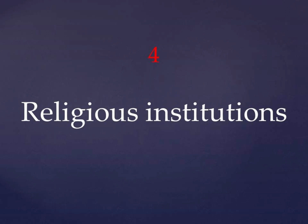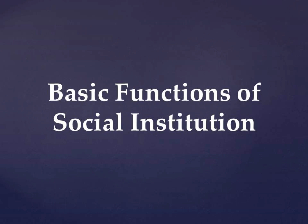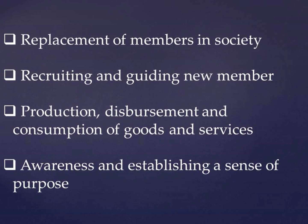Next we are going to discuss about basic functions of social institution. First one is replacement of members in society. The second one is recruiting and guiding new members. Third one is production, disbursement and consumption of goods and services. Fourth one is awareness and establishing a sense of purpose.